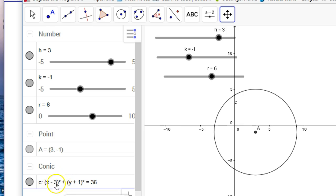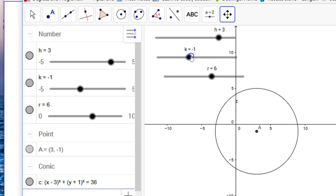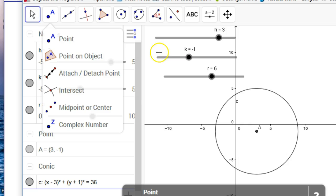Notice the sign inside the parentheses now changes. So to put it in your equation, you have to change the sign, or vice versa. To take it out of the equation, you change it. So if it's x minus 3, your h is positive 3. And then notice y plus 1, your k is negative 1.